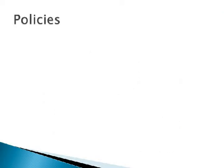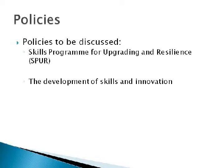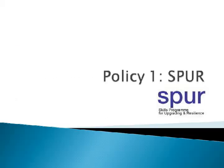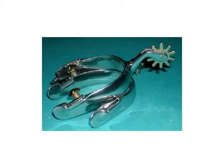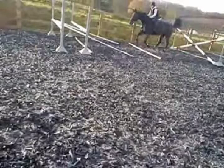The two policies we will talk about are the Skills Program for Upgrading and Resilience, or SPUR, and the ways the government has come up with to develop the skills of employees and innovation. Both policies aim to increase productivity by increasing the employment level. Firstly, we will talk about SPUR — not the spikes you put at the back of your cowboy boots to make the horse go so fast you can almost fall off.